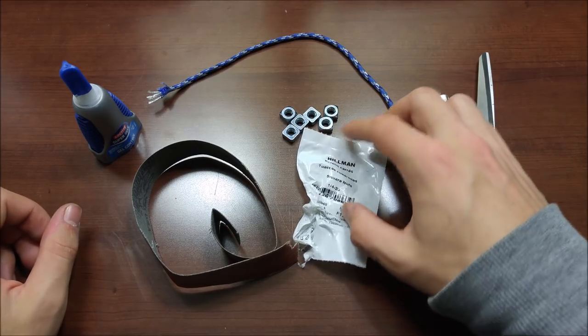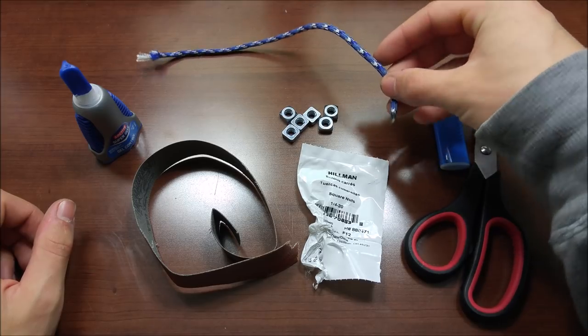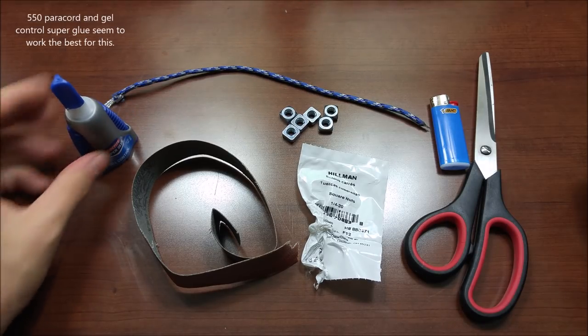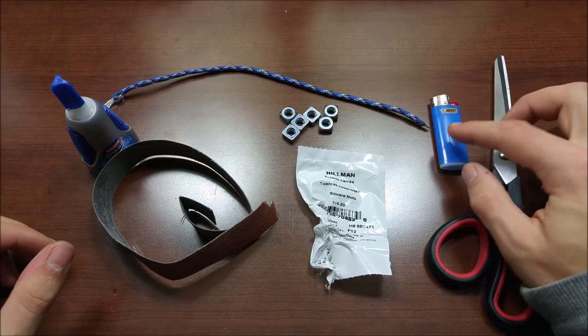To do this, you will need six quarter inch square nuts, a piece of paracord, some super glue, a little bit of rough sandpaper, a pair of scissors, and a lighter.